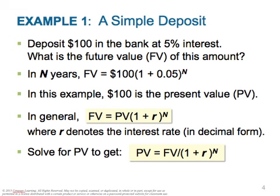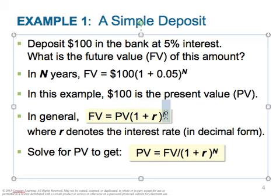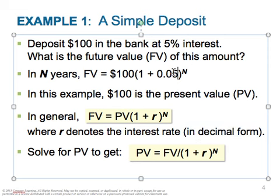Depositing $100 in the bank at 5% interest: in N years, the future value is $100 times (1 + interest rate) raised to the number of years. In this example, $100 is the present value — what you have today. In general, the future value equals the present value times (1 + R) raised to N. Note that R denotes the interest rate in decimal form — so 5% is 0.05, 10% is 0.10, 15% is 0.15, and so on.